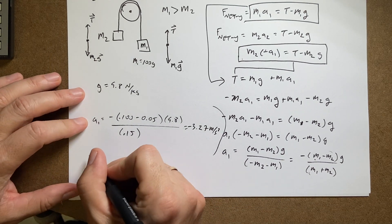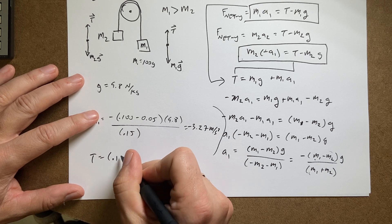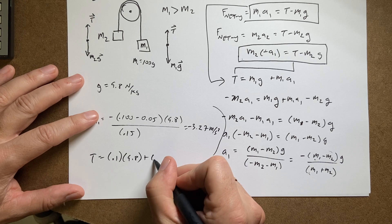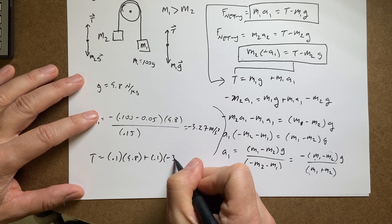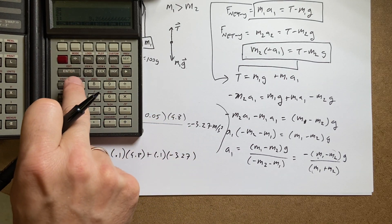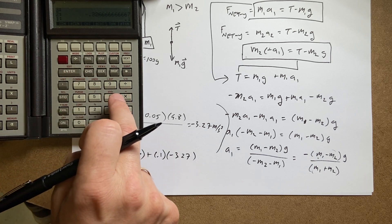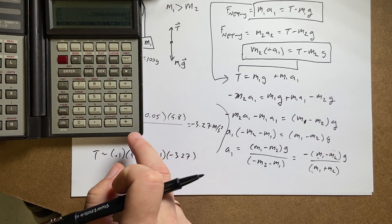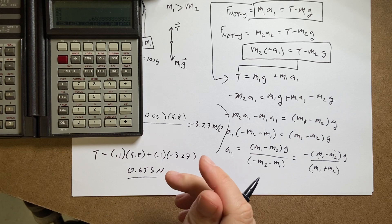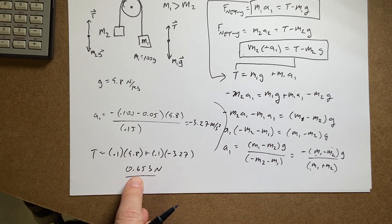Now I can do one other thing. I can calculate the tension. So go back up here. T equals m1, so that's 0.1 times 9.8 plus m1, 0.1 times acceleration, negative 3.27. So let's put that in the calculator. And I get 0.653 newtons. Compare that to the weight, right? Let's just check. So if I have a 0.1 kilogram times 9.8, I get 0.98 newtons as the weight. This is the tension, which is less than the weight.